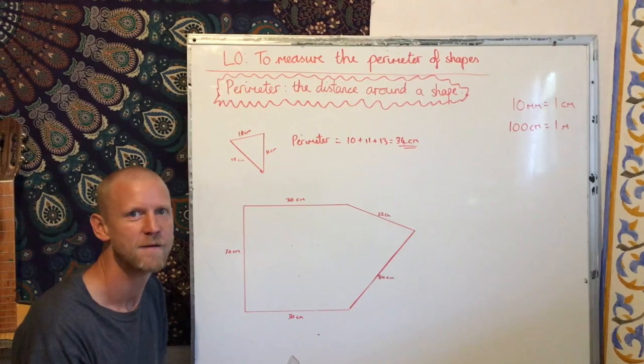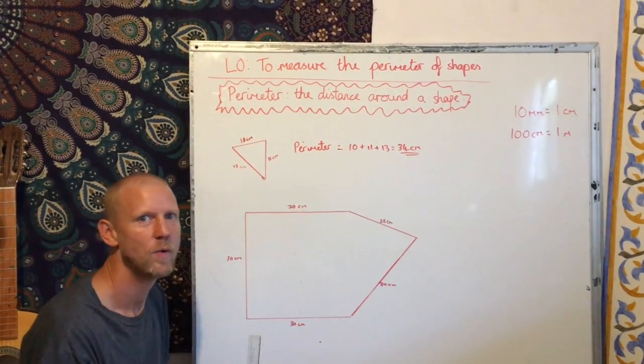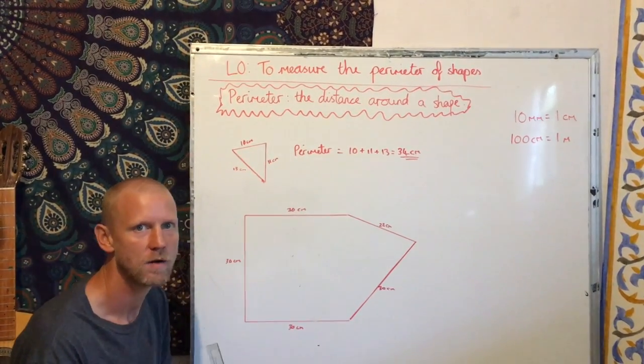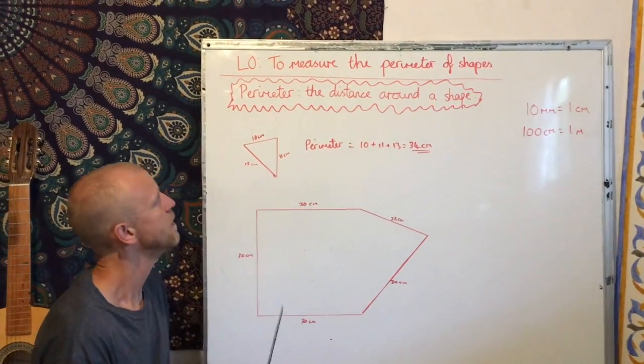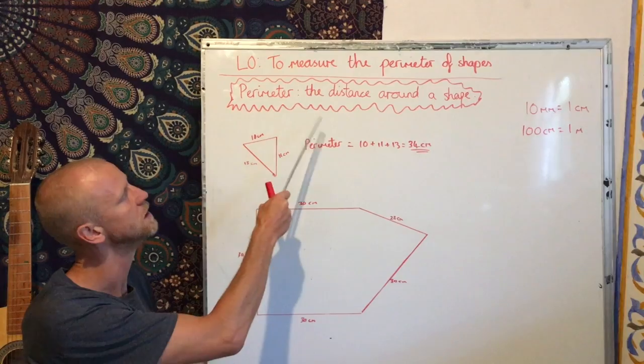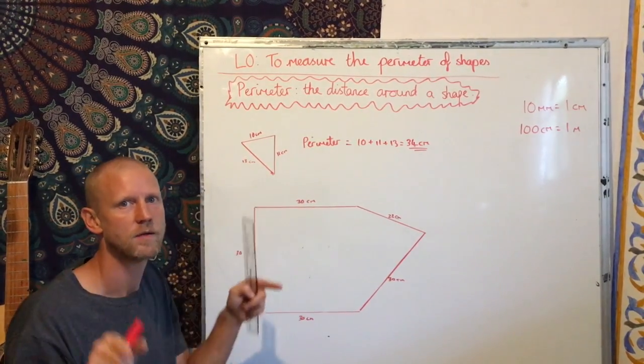Good morning everybody. For our maths today, we are finding the perimeter of shapes. Hopefully you remember a little bit about this. The perimeter is the distance around a shape.